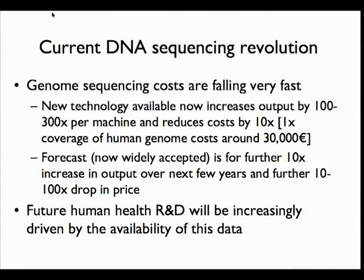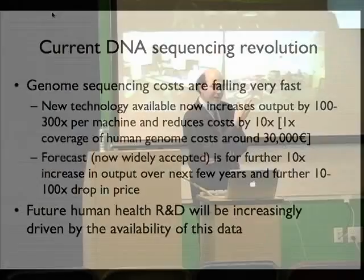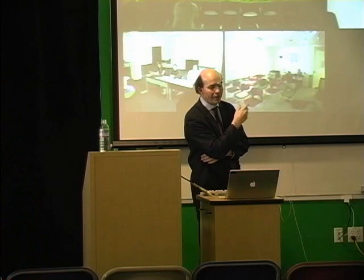There's a current revolution in technology going on. New technology is available now — we have development machines in-house. A number of companies are using new techniques for sequencing, meaning a single machine can produce between 100 and 300 times more per machine. Costs have already gone down by a factor of 10 as a result of this new technology, and promised to come down much more. You can do a first pass across an individual for around $30,000. There's a target to get that down to $1,000 a genome with higher quality, so we're still maybe a couple of orders of magnitude away, but we can see it now.